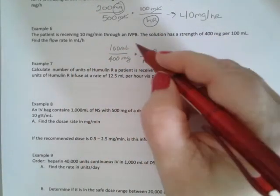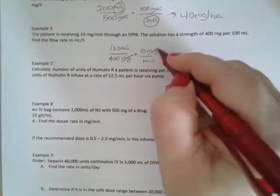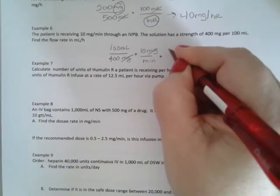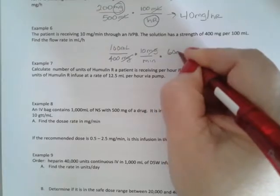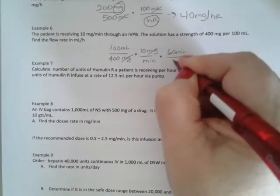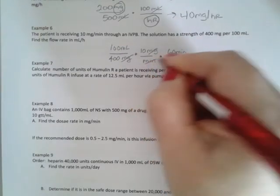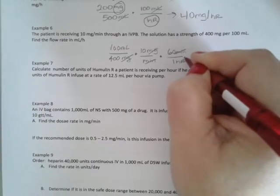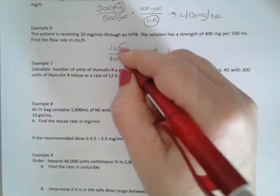So right now I have 10 milliliters per minute. That's an easy fix. I just put here 60 minutes is one hour. Minutes cancel, and I'm left with milliliters per hour.